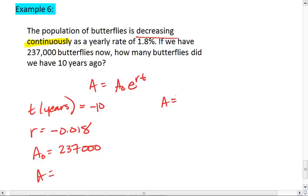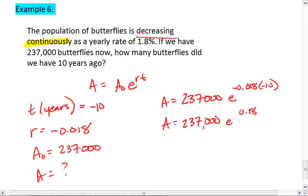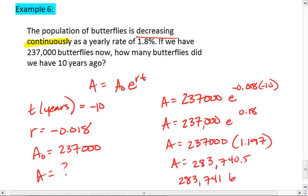We can plug in our values. We get A equals 237,000 times E to the negative 0.018 times negative 10. We get A equals 237,000 times E to the positive 0.18. So A equals 237,000 times 1.197. So A equals 283,740.5, or we can round that to say 283,741 butterflies.